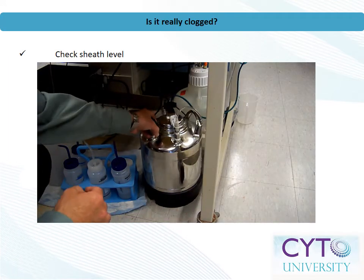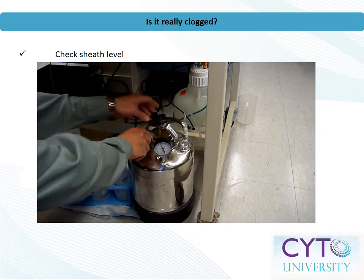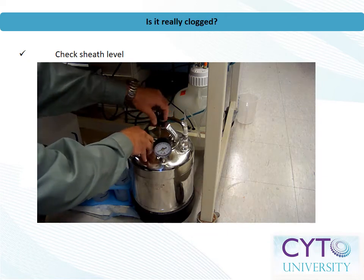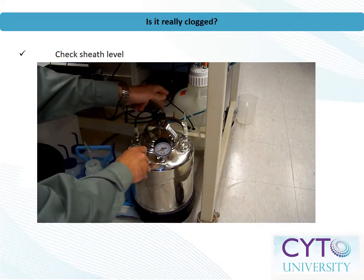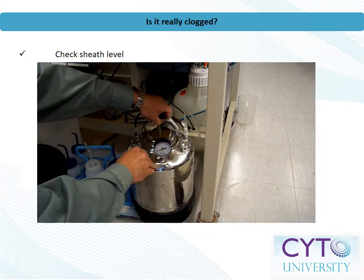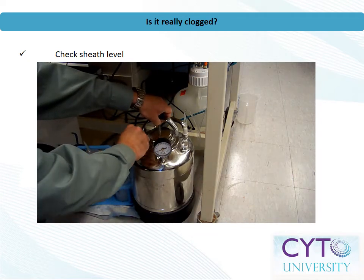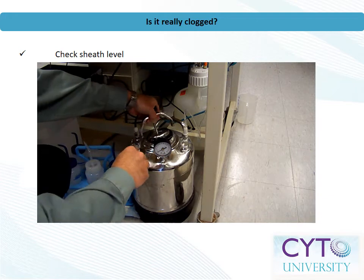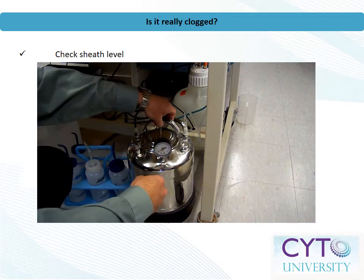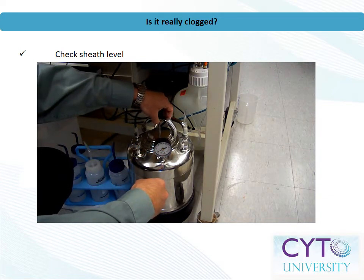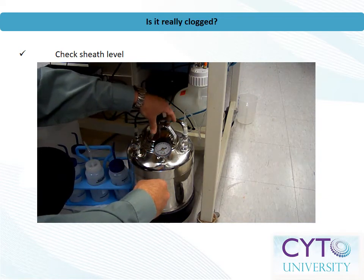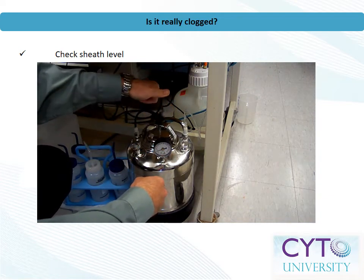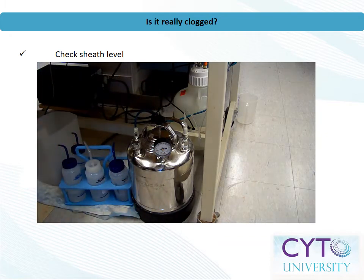To begin, the first thing to ask when presented with a loss of events on screen is: do I have a clog, or is there some other problem with the instrument? The easiest solutions are sometimes the right solutions. On the other hand, if you can see particulates or debris in your samples, you likely clogged the cytometer.